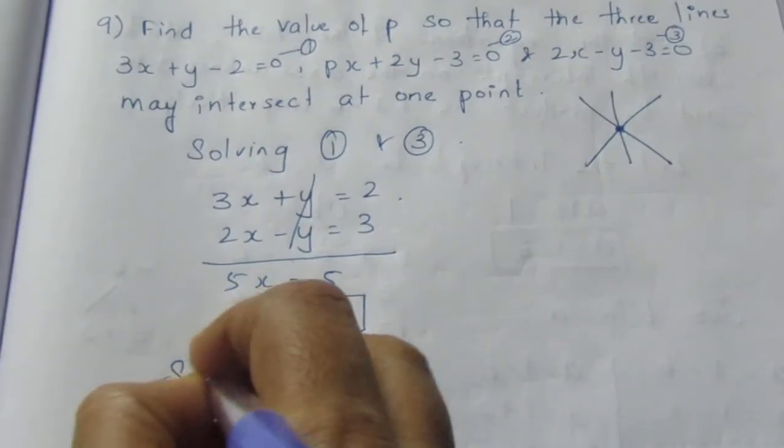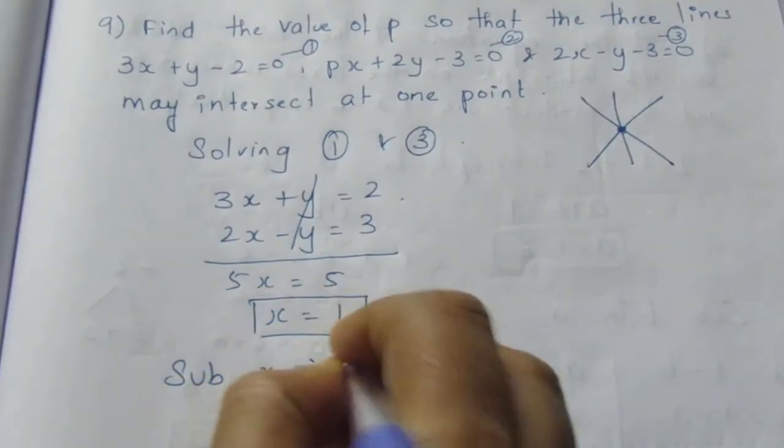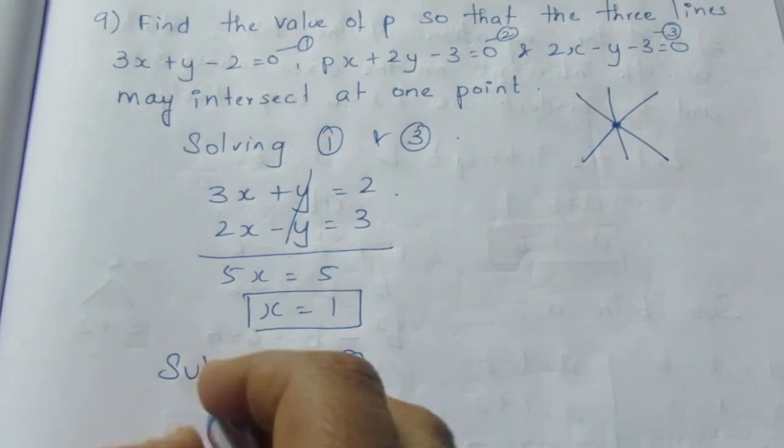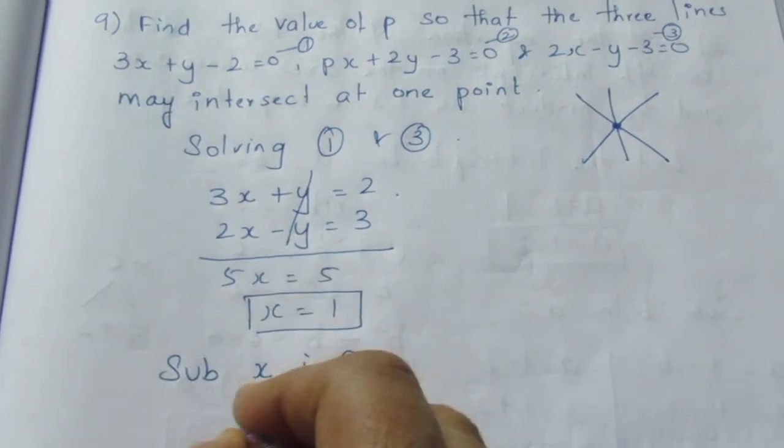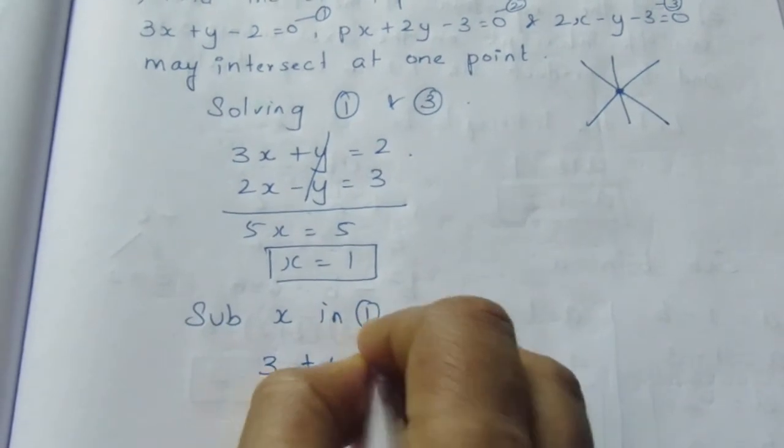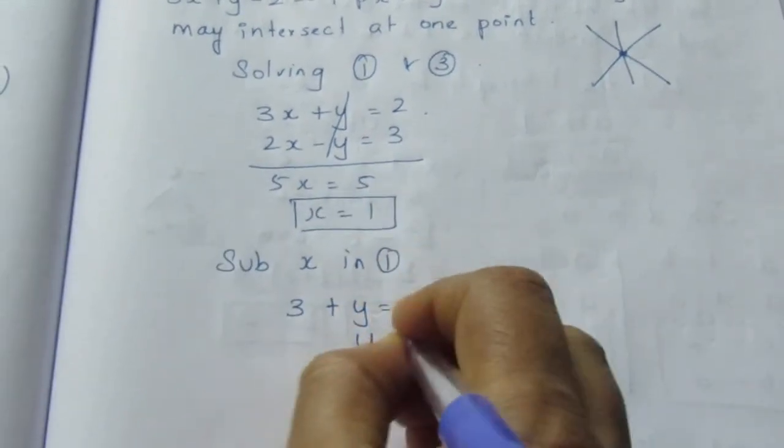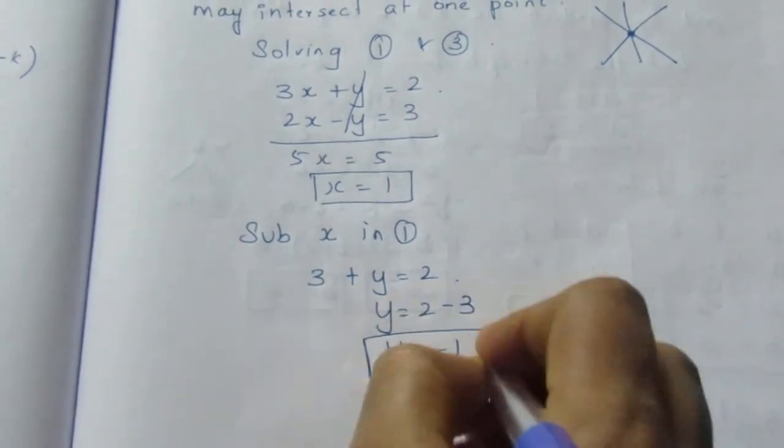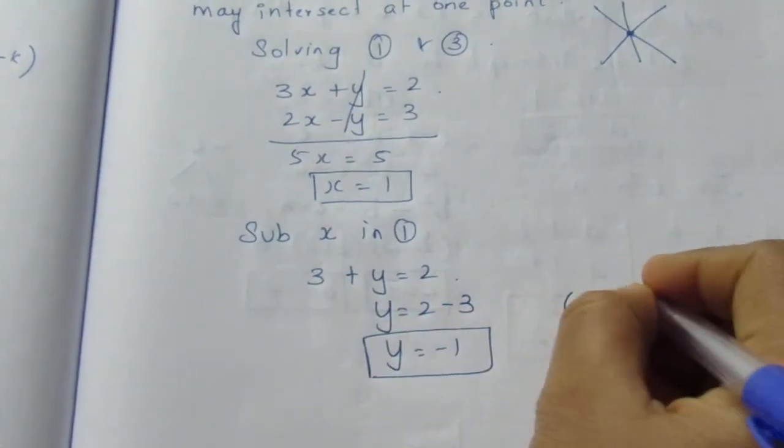Substitute x into any of the equations. Substituting x = 1 in equation 1, I get 3(1) + y = 2, so 3 + y = 2. Therefore, y = 2 - 3, y = -1. Now we know the point is (1, -1).